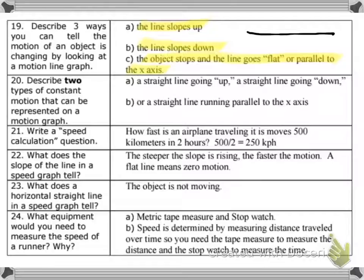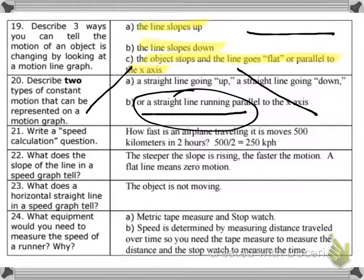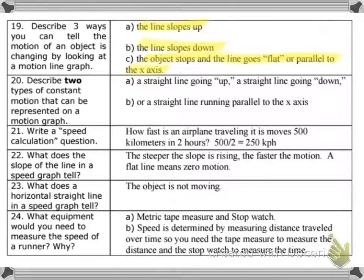Twenty. Describe two types of constant motion that can be represented on a motion graph. Okay. Constant motion. Basically, a straight line. It can be straight going up, it could be straight coming down, or this way. Of course, this way, the horizontal line that I just drew here, that means no motion, okay? There's no motion in that, because time is moving, but the distance is not. Okay. Let me erase those. All right.